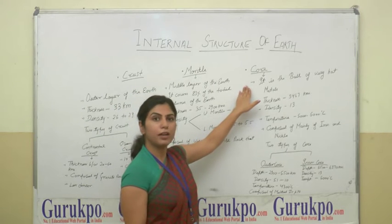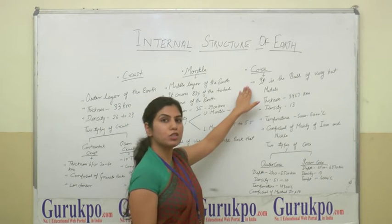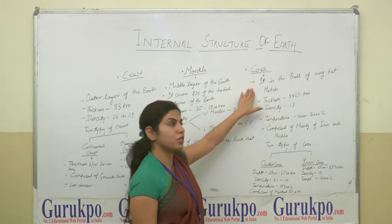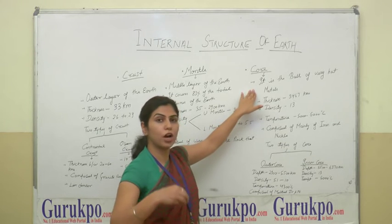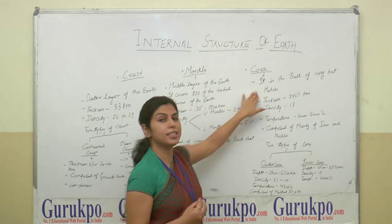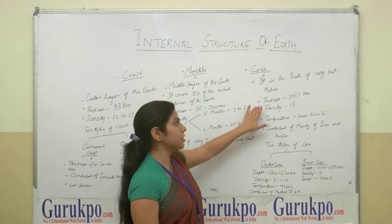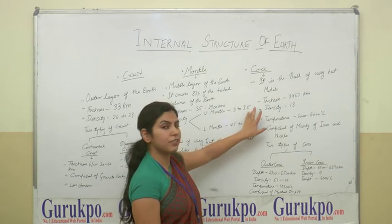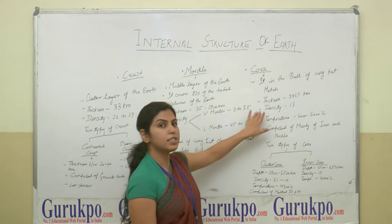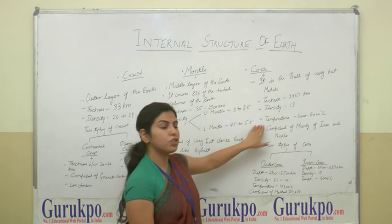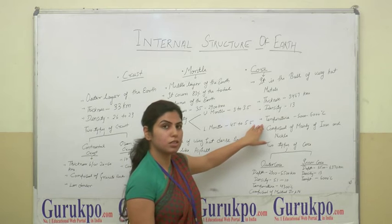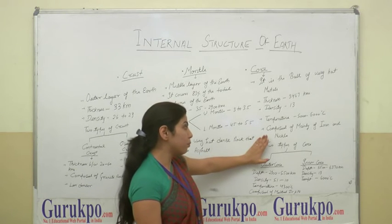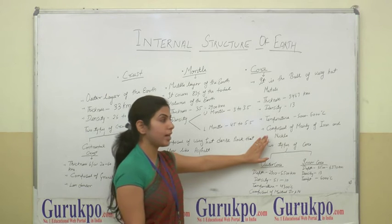The core is the inner and last part. It is a ball of very hot material. As we go downward, the temperature increases inside the earth. Its thickness is 3,467 kilometers, density is 30, and the temperature is 5,000 to 6,000 degrees centigrade. The core is composed mainly of iron and nickel.